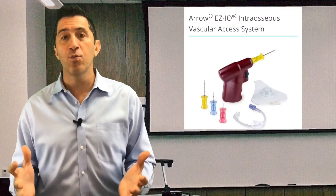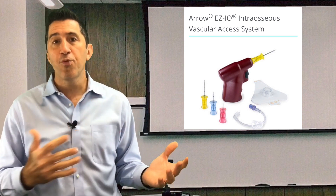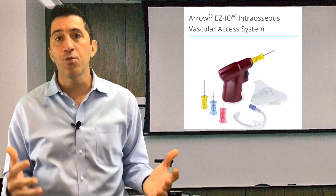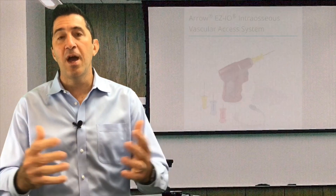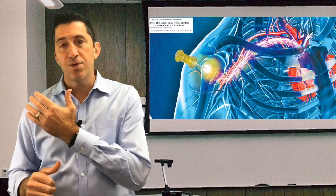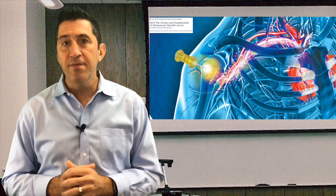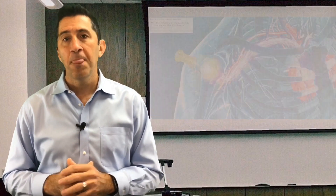Now in the adult, what do we do? Most of us do the proximal humerus for the IO in the adult patient. It's a direct shot to the heart — it's nice and relatively simple to do.